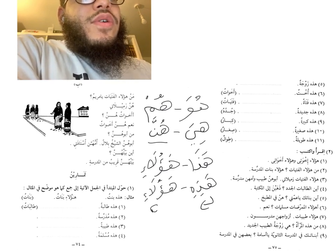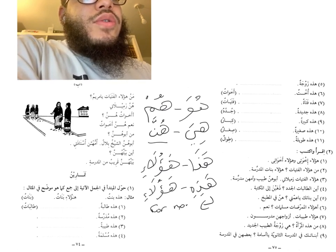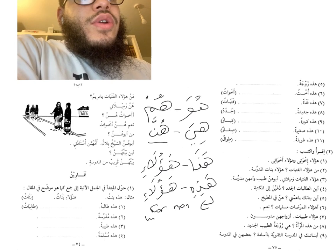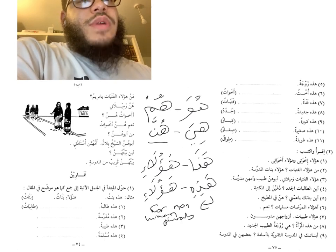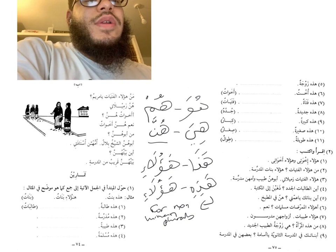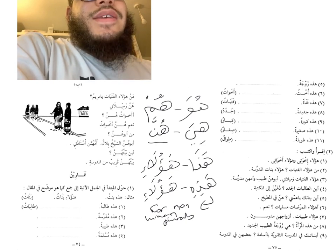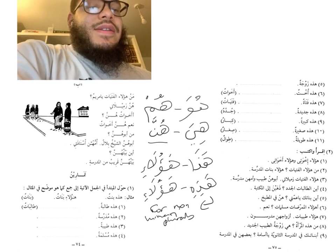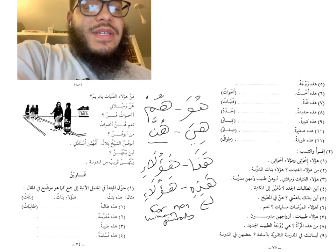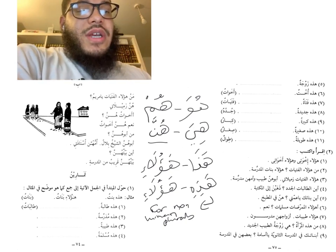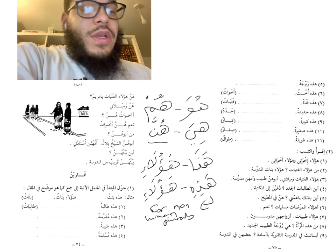Any plural that is not a human — whether an object or an animal — we treat it as if it's a singular feminine noun. So we use هذه for non-human plurals. Anything that's not human, we use هذه and تلك, as we will come to see insha'Allah.